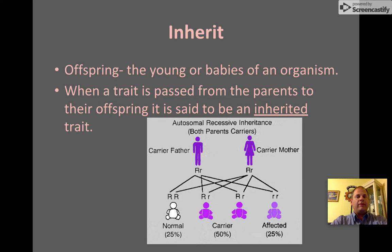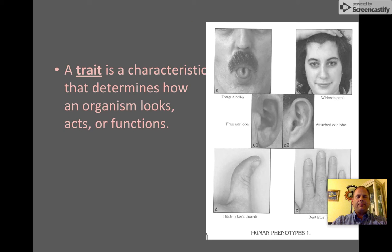Offspring can refer to animals or plants. When a plant produces seeds that grow into adult plants, that adult plant is the offspring of its parent plant. A trait is a characteristic that determines how an organism looks, acts, or functions.